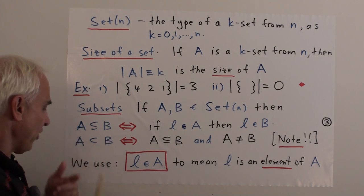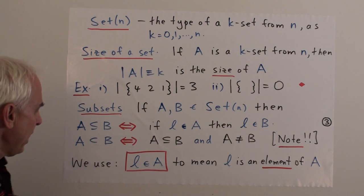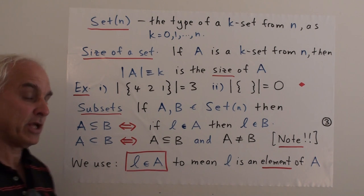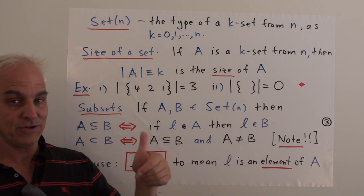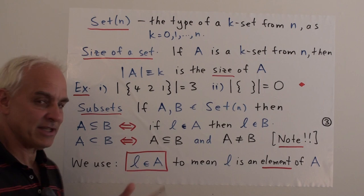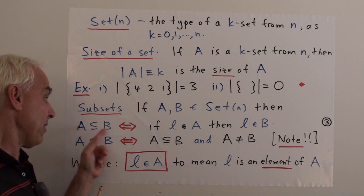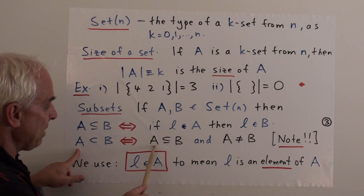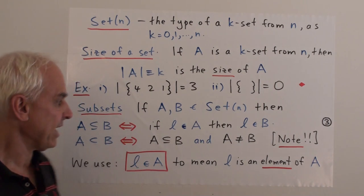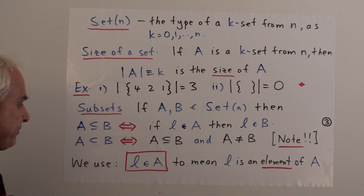The subset relation corresponds to the less-than-or-equal relation at the level of multiplicities: multiplicities of elements in sets are always either zero or one, and the subset relation says the multiplicity of any element in a is less than or equal to the multiplicity in b. We can reserve the strict subset symbol for a being a subset of b but not equal to b — a proper subset — meaning at least one element of b is not in a.